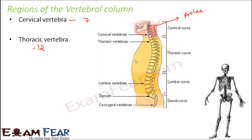The ribs are present like a cage-like structure in the thoracic region, so because of the presence of the ribs they are less flexible but more strong. Next is the lumbar vertebra — there are a total of 5 vertebrae and they are located below the thoracic cavity. They are more flexible due to the lack of ribs, present near the waist region.